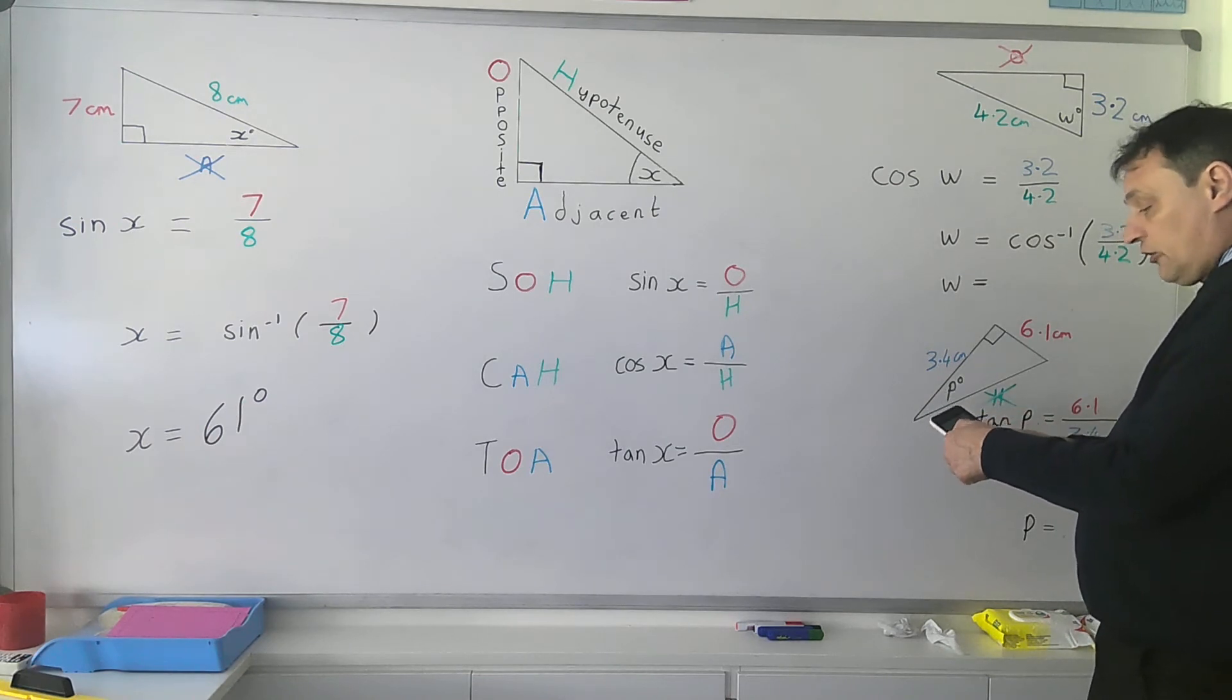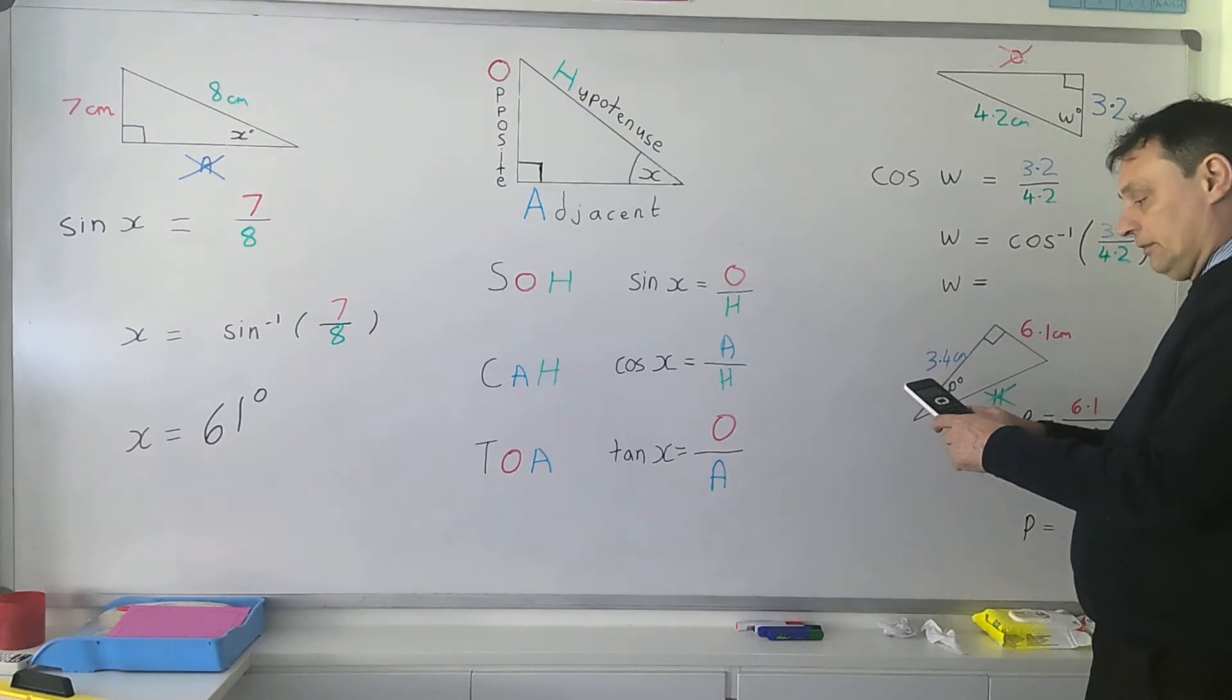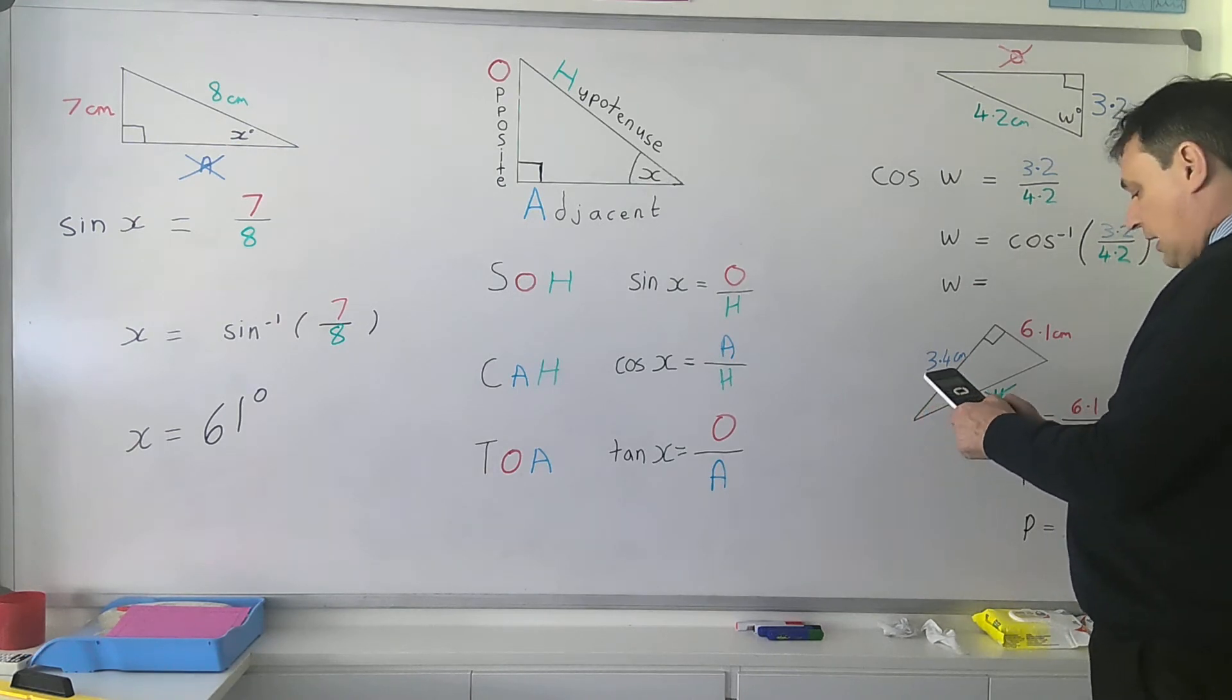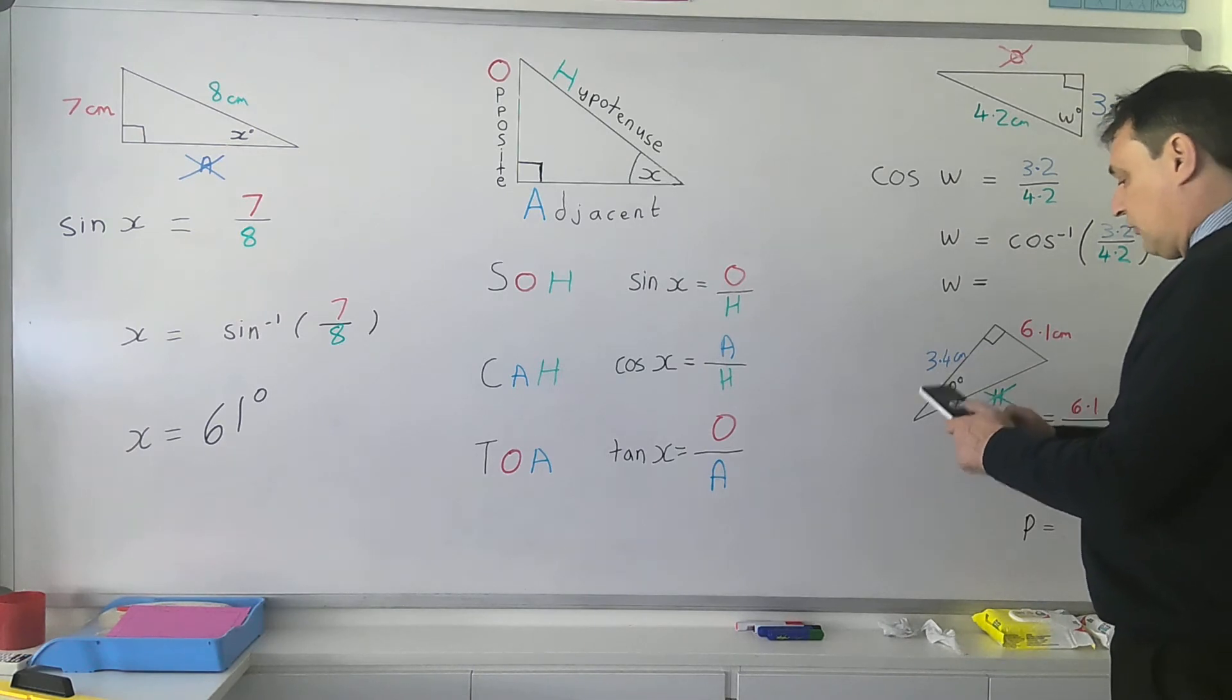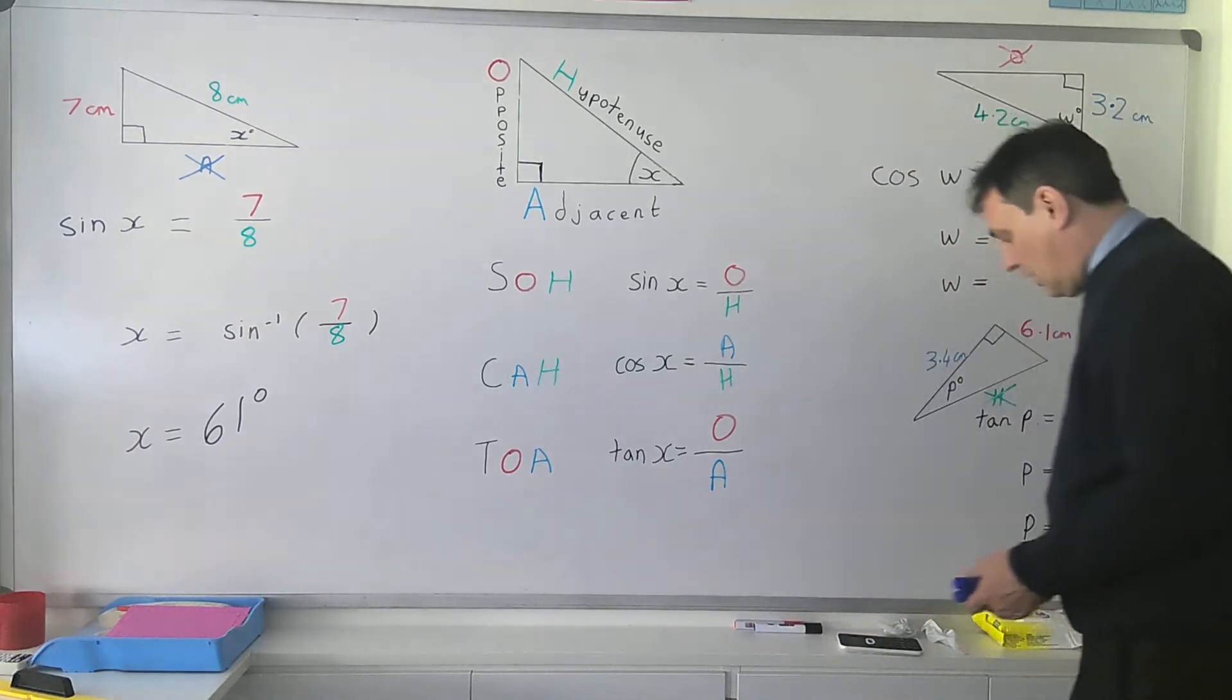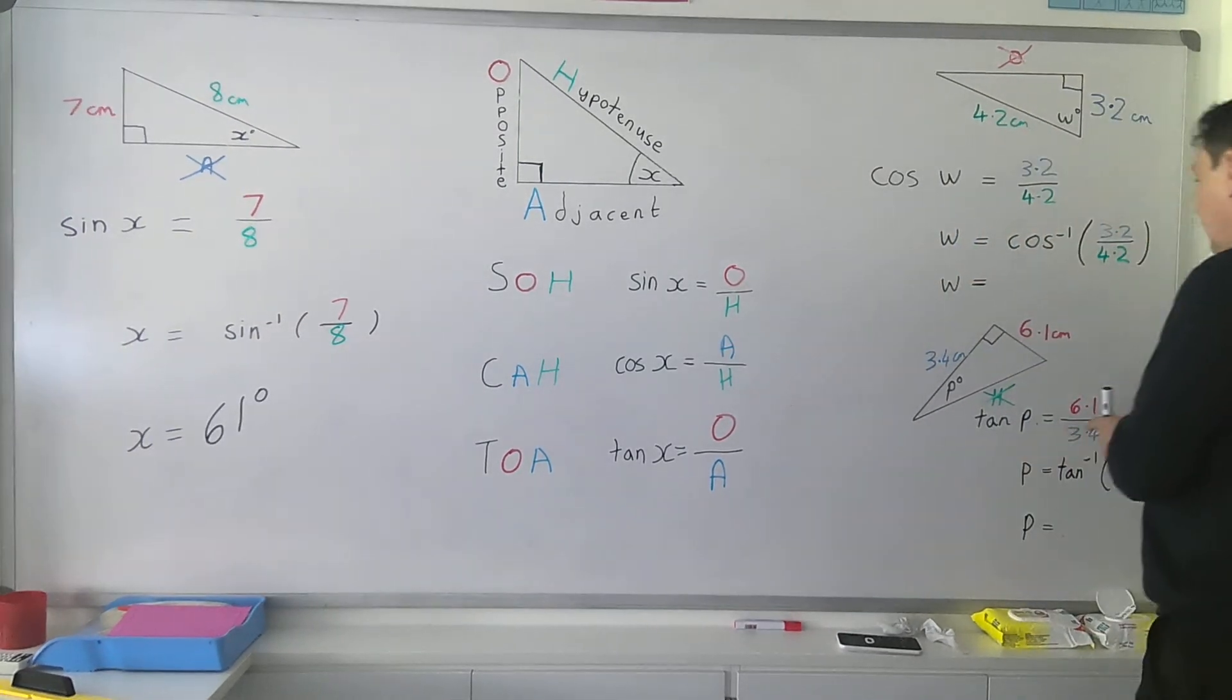So second function or shift button, cos bracket, 3.2 divided by 4.2, close bracket, equals button. Let's do that again just to check, so shift button cos bracket, 3.2 divided by 4.2, shut bracket, gives us 40.36 degrees. I'm going to do it to the nearest degree, I'll call it 40 degrees.